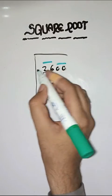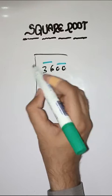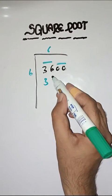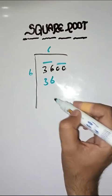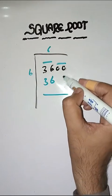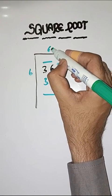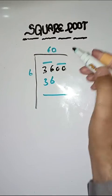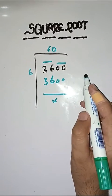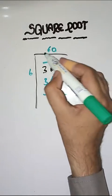So first we have to solve 36. We take the number 6, since 6 times 6 equals 36. And we have to put a number 0 here. So this is completely solved. The square root of 3600 is 60.